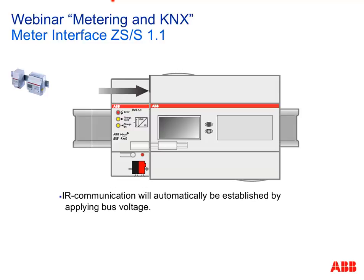The IR communication is automatically established when voltage is applied — you don't have to do anything physically. The only thing needed is to adjust parameters in ETS to match the connected energy meter type, since automatic meter detection is not available. Regarding installation, it's very easy and simple.